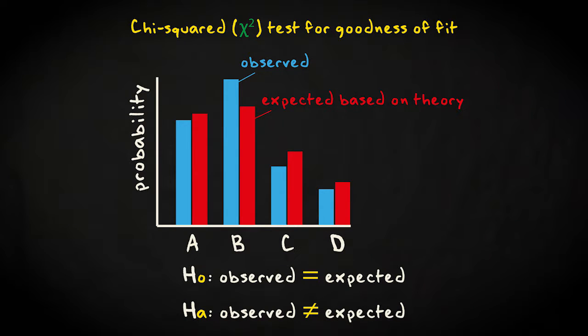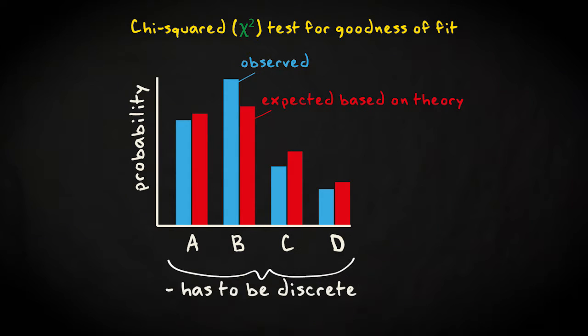The distributions that can be tested have to be discrete, but can concern variables of any measurement level: categorical, ordinal, as well as numerical.